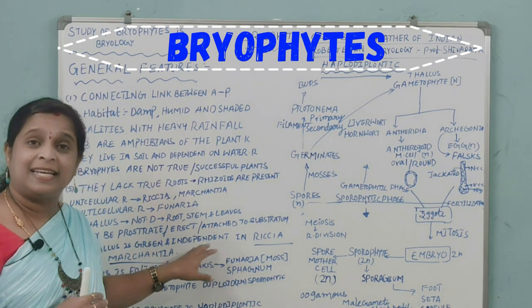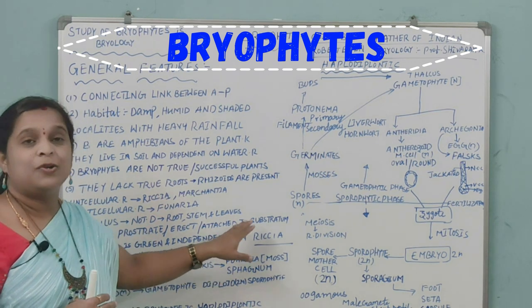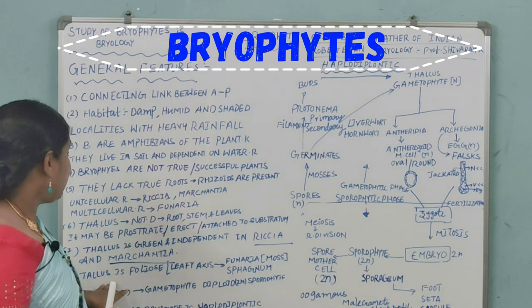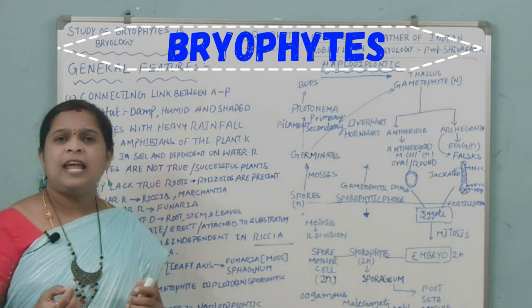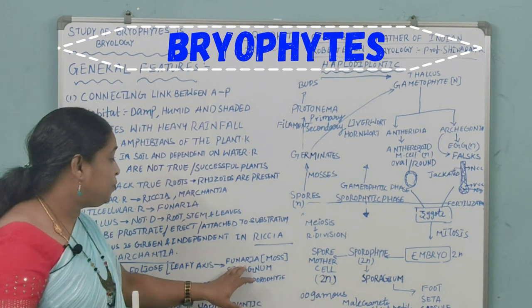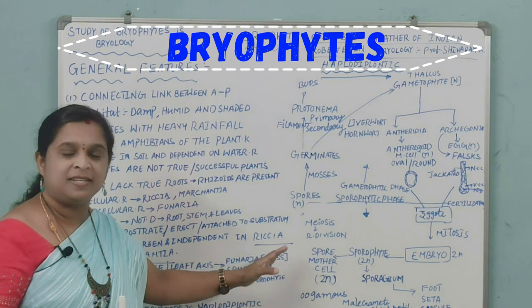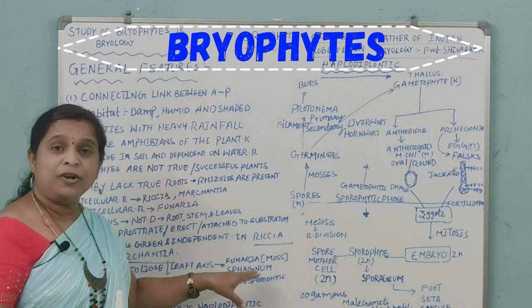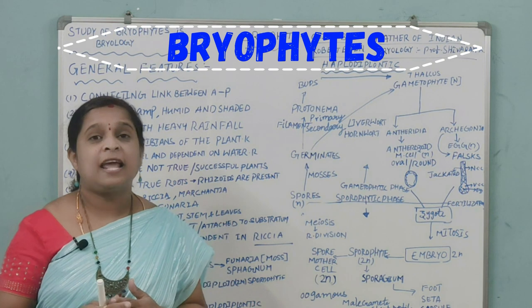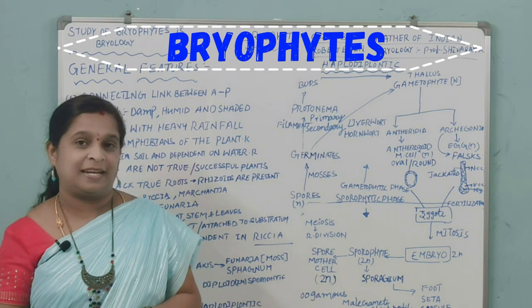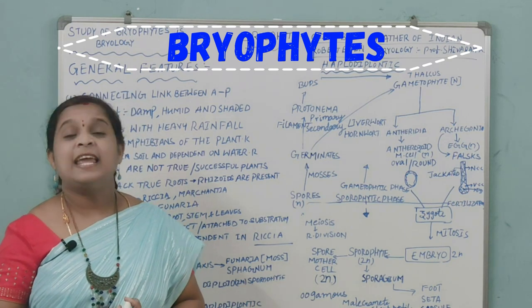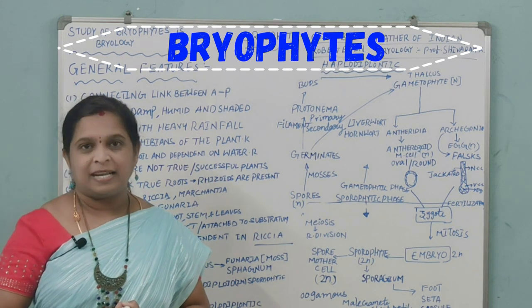The thallus is green and independent, as seen in Riccia and Marchantia. The thallus is foliose — meaning it has a leafy axis-like structure — as observed in Funaria (the moss plant) and also in Sphagnum. The life cycle of bryophytes is haplodiplontic, meaning it exhibits both gametophytic and sporophytic phases.